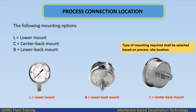Process connection location: The following mounting options are available — L (lower mount), C (center back mount), and B (lower back mount). The type of mounting required shall be selected based on the process site location.